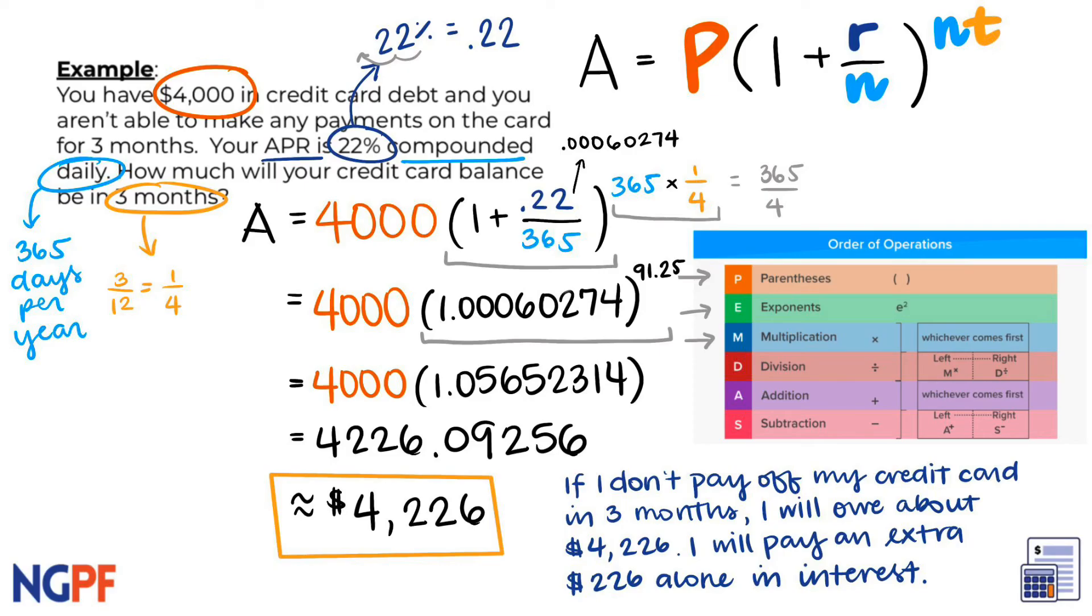This means that you would have had to pay an extra $226 just in interest alone for not paying on time.